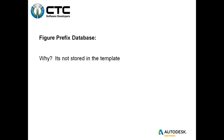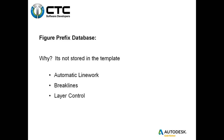Figure prefix database. What is it? It's the database that says if it's this code, draw a line; if it's this code, make it a break line; if it's this code, make it a lot line. It's not stored in the drawing or template, but we access it every time we open a new drawing. It's used for creating automatic linework and break lines automatically, and for layer control — if it's this code, put it on this layer. With layer control comes color, line type, and line weight.